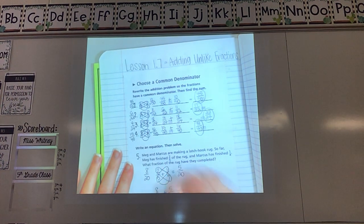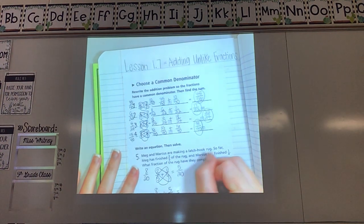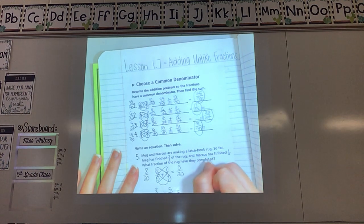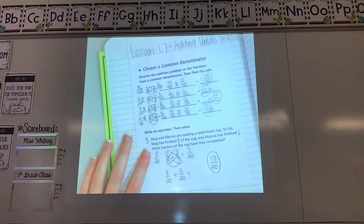Be careful here. We don't want to mess up now. What is 8 twentieths plus 5 twentieths? Hopefully, you said 13 twentieths. Perfect. That would be my answer.